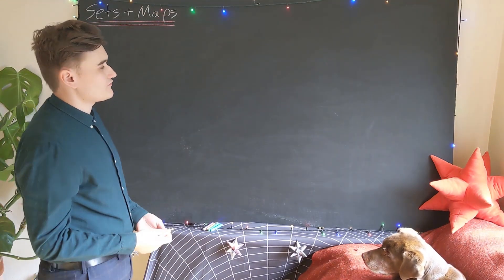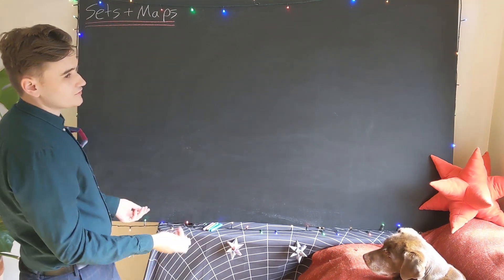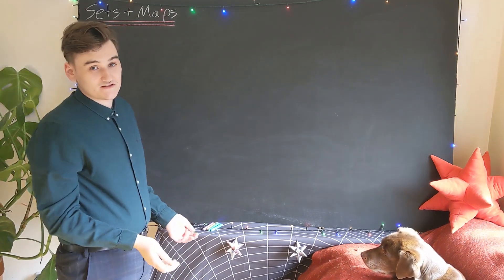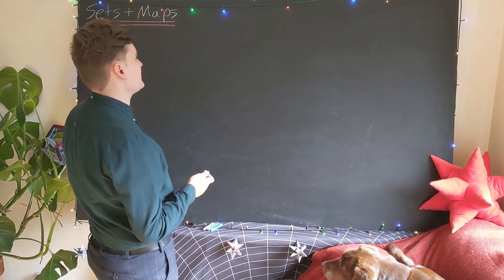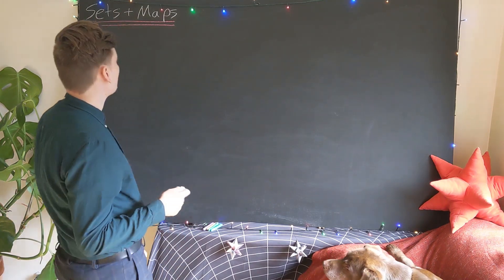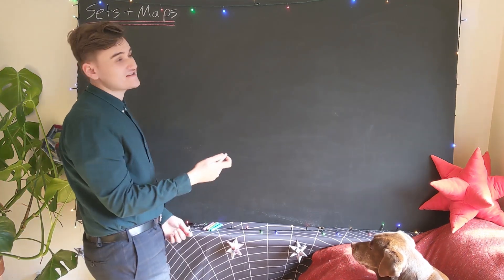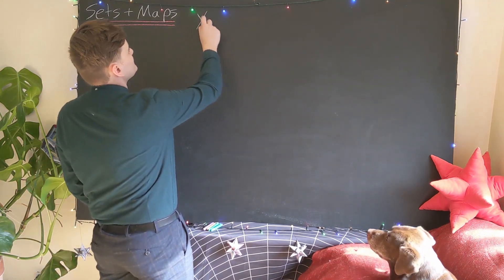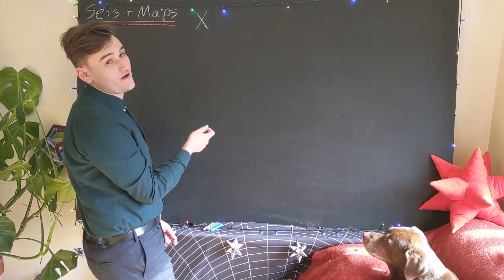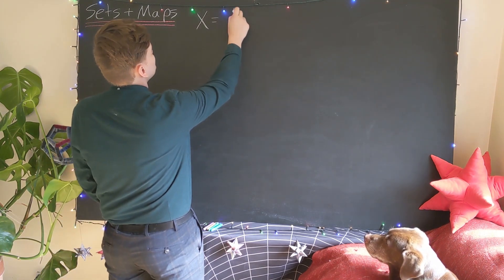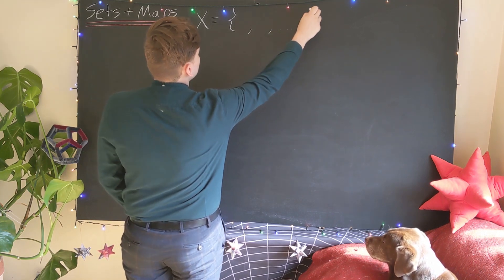So now I want to go over a few preliminary notions which are going to be useful throughout what we're going to go on to discuss, so it's good to get used to these ideas now. I'm going to discuss sets and maps. A set is probably one of the most primitive mathematical objects which we can define, and it's simply just a collection of what we call elements.